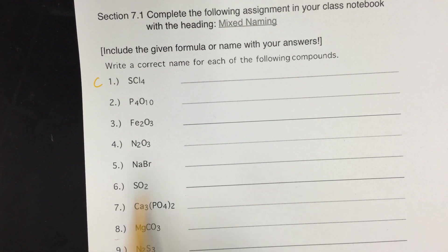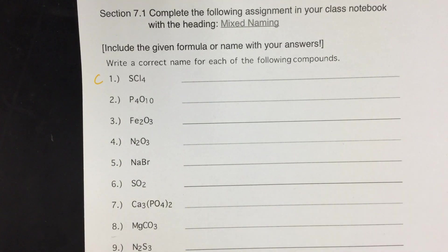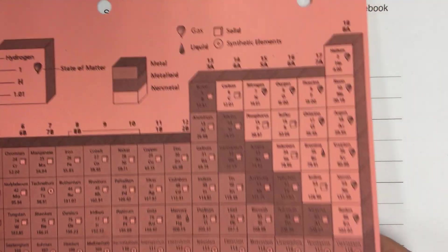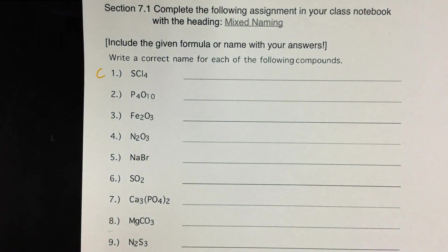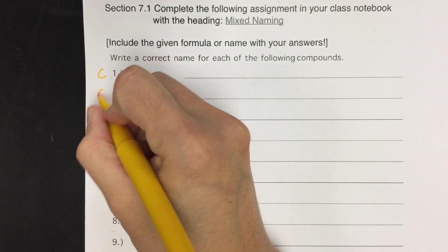Go to the next one, which has phosphorus and oxygen. So we go to our periodic table. Phosphorus is here, oxygen is here. Again, two non-metals, so it's going to be covalent.